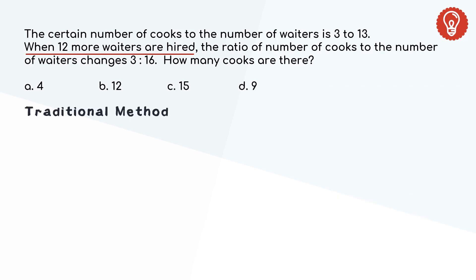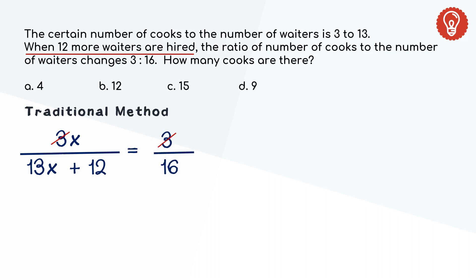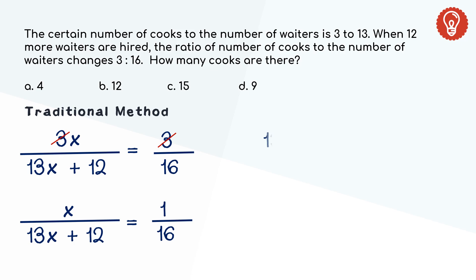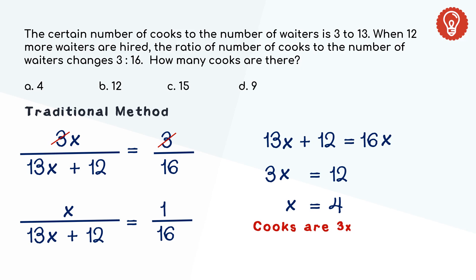Let cooks be 3x and waiters be 13x in number. When waiters are increased by 12, the ratio becomes 3 to 16. Since 3 is common on both sides, it becomes x / (13x + 12) = 1/16. Cross multiplying: 13x + 12 = 16x, which gives 3x = 12 and x = 4. Since cooks were 3x in number, substituting x = 4, cooks were 12 in number. Hence option B is the correct answer.